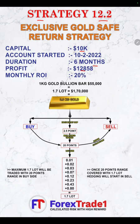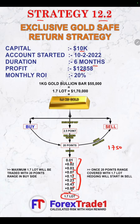Starting from the cycle: it opens on a buy or sell side. For example, if the buy cycle starts from 1750 points, it will take the buy side from a lot size of 0.01, increasing lot size in the sequence 0.01, 0.02, 0.03, 0.07, 0.12, 0.23, 0.43, up to 0.80. So in total, combining from 0.01 to 0.80, it will trade up to 1.7 lots total.